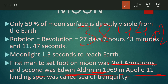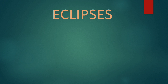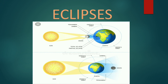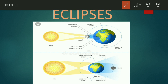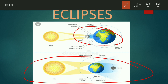The landing spot was called the Sea of Tranquility. Next, we will discuss about eclipses. A solar eclipse occurs when the moon comes between the earth and the sun and the shadow of the moon falls on the earth. A lunar eclipse occurs when the earth comes between the sun and the moon — the shadow of the earth falls on the moon and the moon is not visible, which you can also call a new moon.